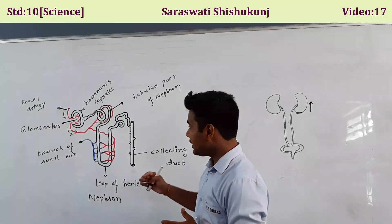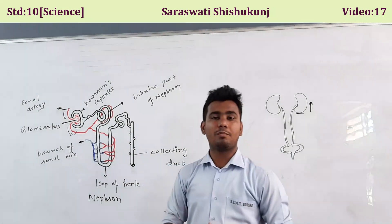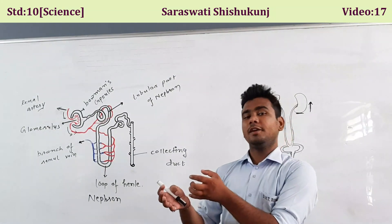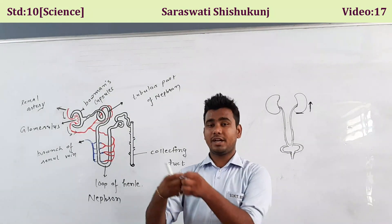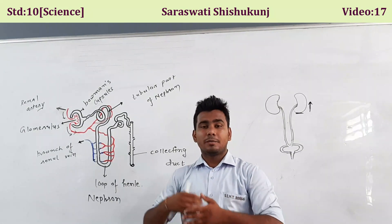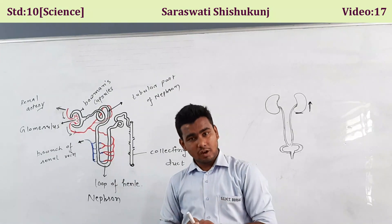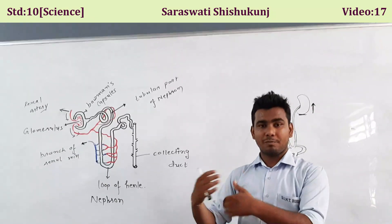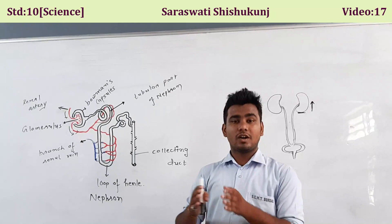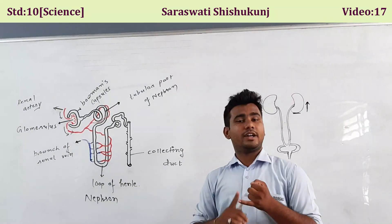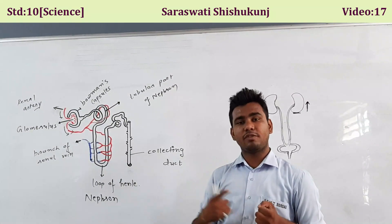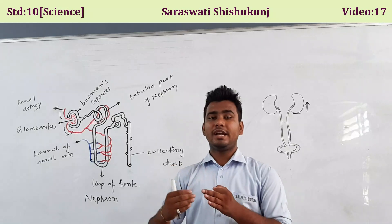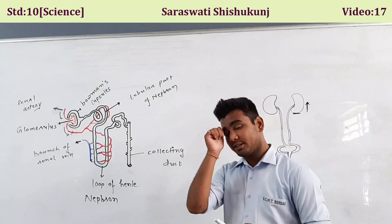The functions of the kidney are: first, to separate nitrogenous waste — to separate urine from the blood; second, to maintain the pH level of the blood; and third, to regulate and maintain the concentration of blood plasma properly. The removal of waste through urine formation, maintaining blood pH, and maintaining blood concentration are all done by the kidney.